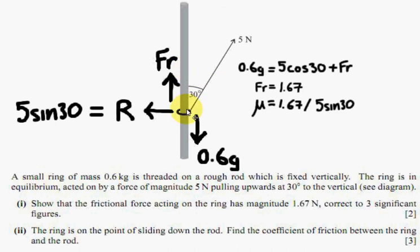So since mu r is equal to friction, and r is equal to 5 sin 30, rearranging gives you mu must be 1.67, which is your frictional force, divided by the reaction force, which will give you mu, and that is it.